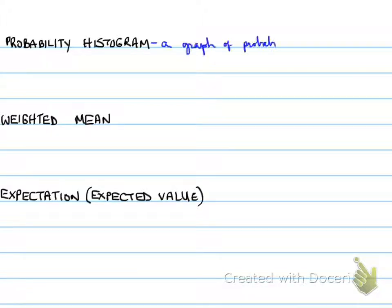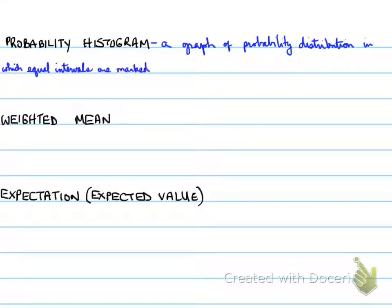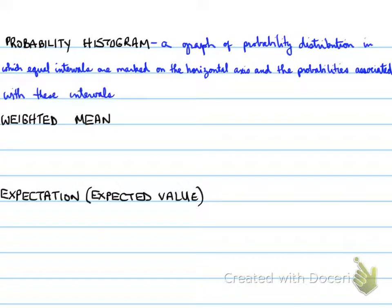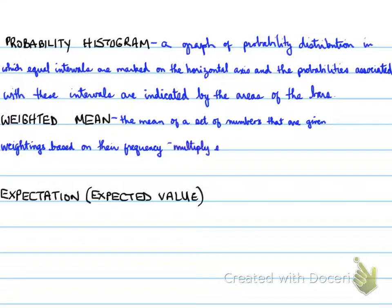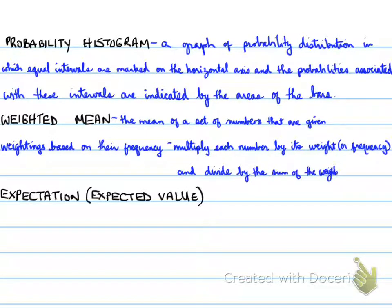The probability histogram is a graph of probability distribution in which equal intervals are marked on the horizontal axis, and the probabilities associated with these intervals are indicated by the areas of the bars. Weighted mean is the mean of a set of numbers that are given weightings based on their frequency — multiply each number by its weight or frequency, and divide by the sum of the weights.